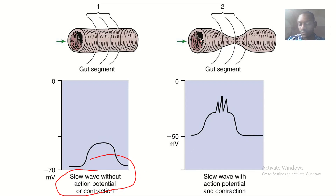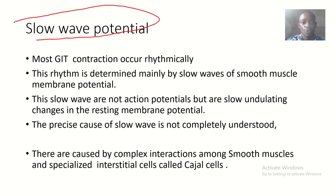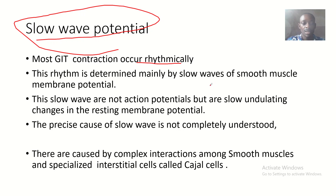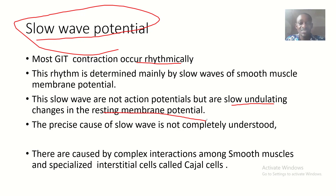Now let's talk about the slow wave potential. Most gastrointestinal contractions occur rhythmically, and the rhythm is determined mainly by slow waves of the smooth muscle membrane potential. These slow waves are not actually action potentials — they are slow, undulating changes in the resting membrane potential, like gradual bit-by-bit changes before the membrane potential spikes. That is the slow wave potential.